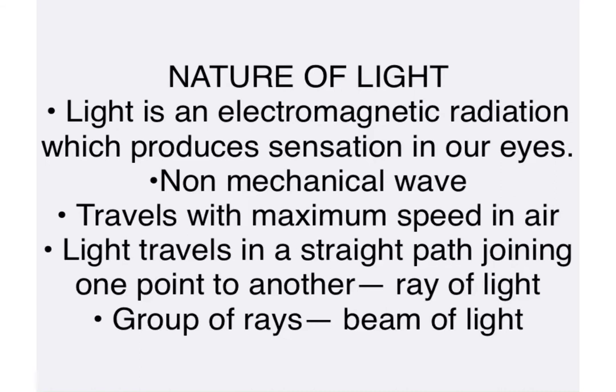Light travels in a straight path joining one point to another point. This straight path joining one point to another in the direction of propagation of light is known as a ray of light, and a group of such rays of light is known as a beam of light. So what we are seeing is a beam of light. When light rays are incident on any medium, either they are reflected or refracted and partially absorbed.